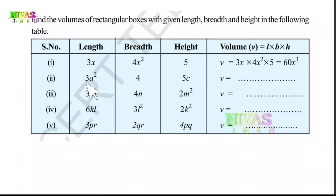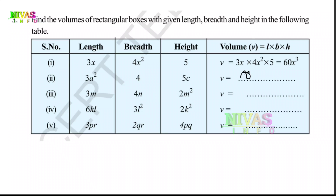Second one: 3 into 4 is 12, 12 into 5 is 60. Here we have A squared and C. A squared into C gives A squared C. So the answer is 60A²C.